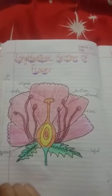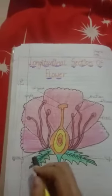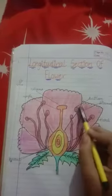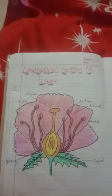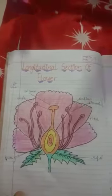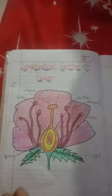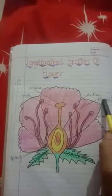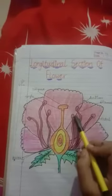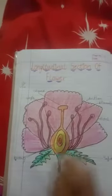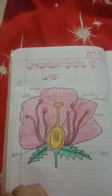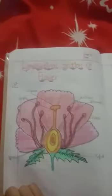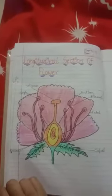Next, we talk about stamen, which is the male reproductive part. It consists of the anther. This is the anther — a bag-like structure which contains pollen grains. Next, we talk about the filament. This is the filament — a stalk which attaches the anther to the flower.